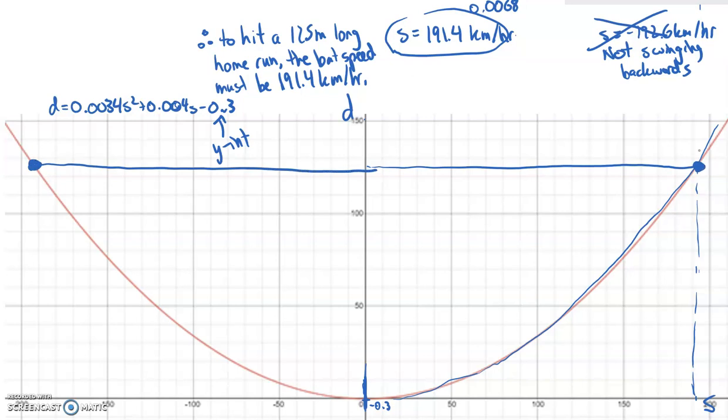So essentially what we were doing is we were taking our x-axis, our s-axis in this case, and moving it up 125, and just solving the 125 intercepts. And so that's the whole idea. If you're given a value of y or of d in this case that is not 0, sub it in, rearrange it, set it equal to 0, and you're just solving for the intercepts that go through that line on the y-axis.